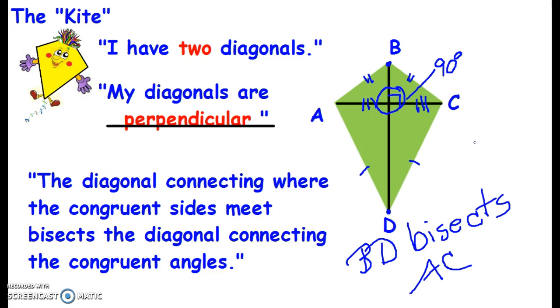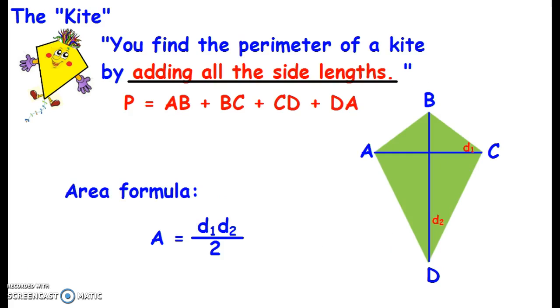So those are a lot of properties, I know, to remember. But that's the properties of a kite. Okay, so now let's go to one more thing. And that is, in a kite, how do I find the perimeter of the kite?